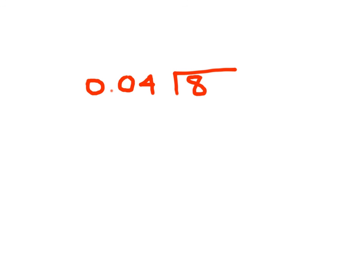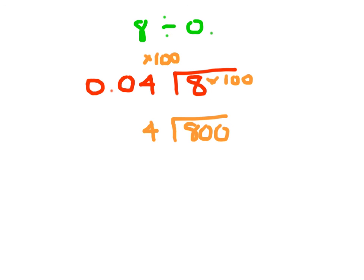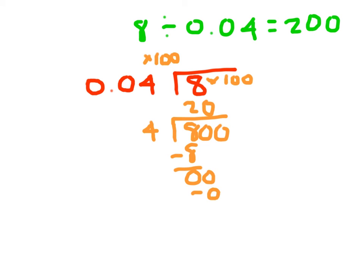I'm going to walk you through one more: 8 divided by 0.04. What are we going to multiply the divisor and the dividend by? Right — 100. What are we left with for our divisor when we rewrite the division problem? Ideally you said 4. And what goes inside? 800. So we just need to solve 800 divided by 4, giving us the solution to 8 divided by 0.04 — that's going to be 200. And that's how we go ahead and divide a whole number by a decimal.